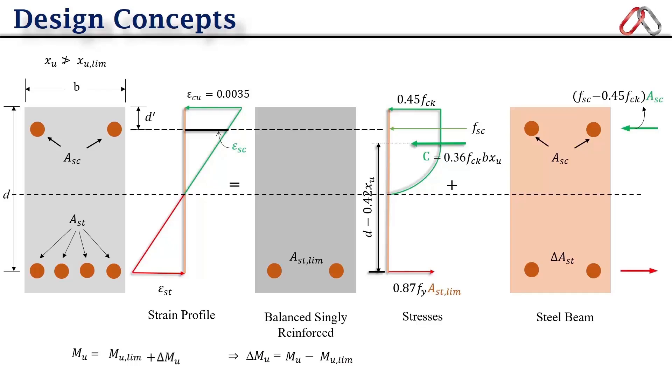Forces in compression steel will be f_sc minus 0.45 f_ck into A_sc, as we did in the previous lecture. And in tension steel it will be 0.87 f_y into delta A_st. And the strength between these two stresses is d minus d dash. So here we can find out the total tension steel required as A_st is equal to A_st limiting plus delta A_st. Or in another way we can say that p_t is the total percentage of tension steel, then we can write it as p_t is equal to p_t limiting plus delta p_t. Here we convert the area of steel into percentage form.